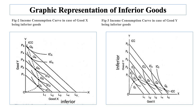In figure 2, income consumption curve slopes backward — that is, upward to the left, bending towards the Y-axis. This shows good X to be an inferior good, since beyond point Q2 income effect is negative for good X, and as a result its quantity demanded falls as income increases. In figure 3, the income consumption curve slopes downward to the right beyond point Q2.